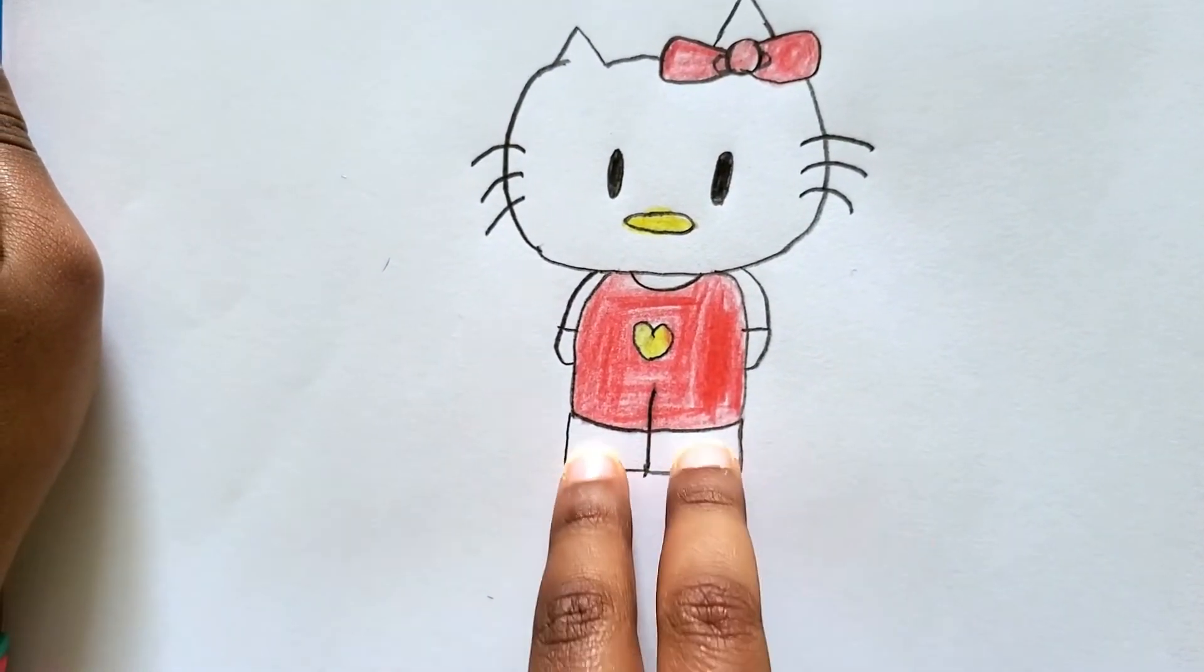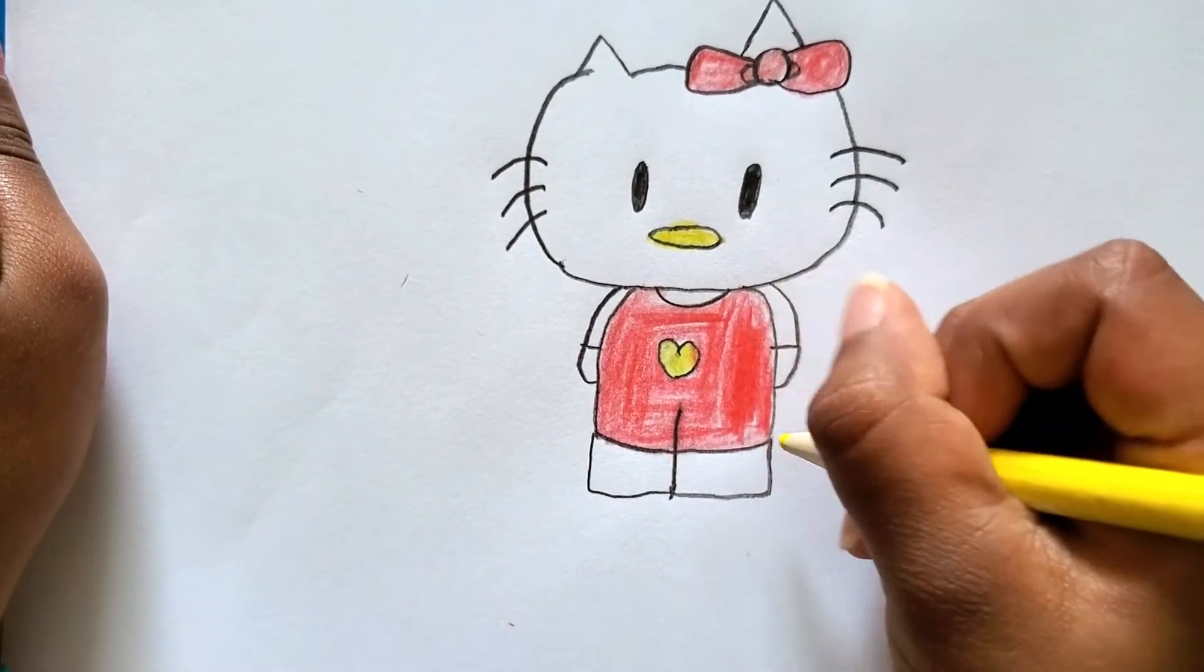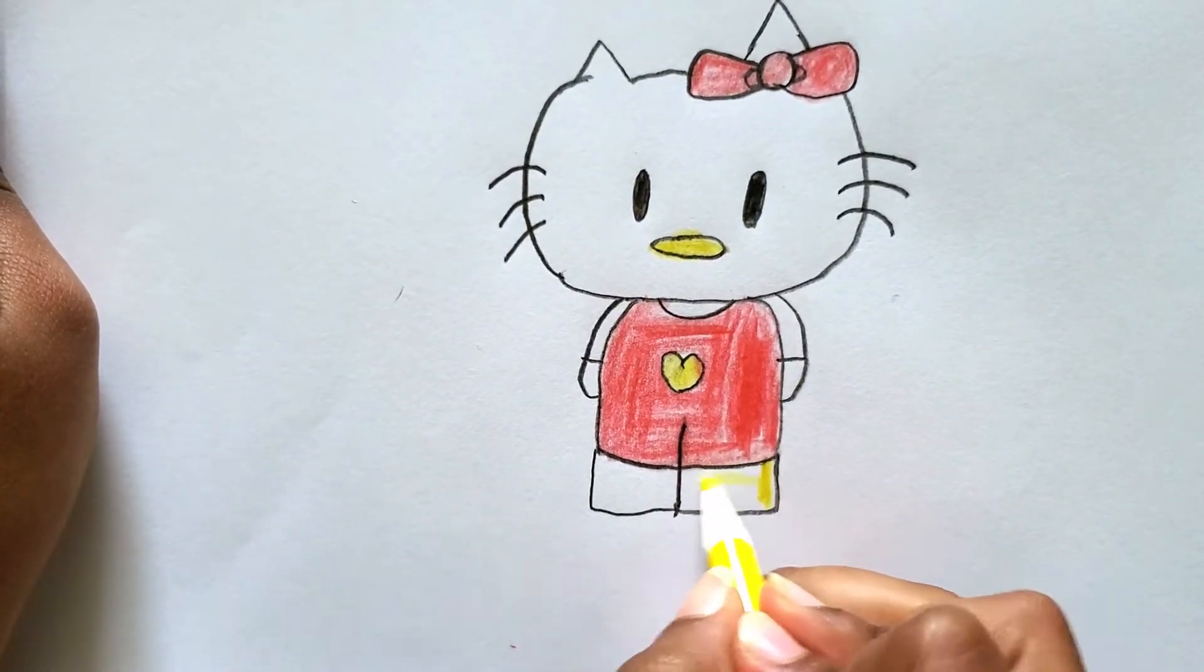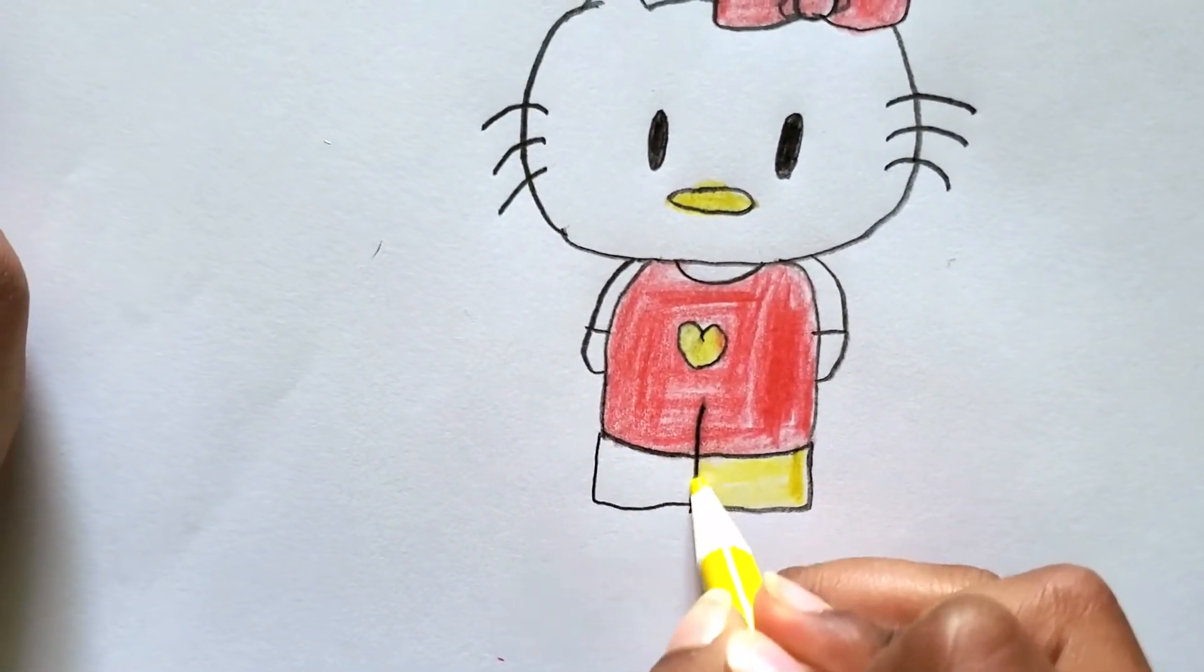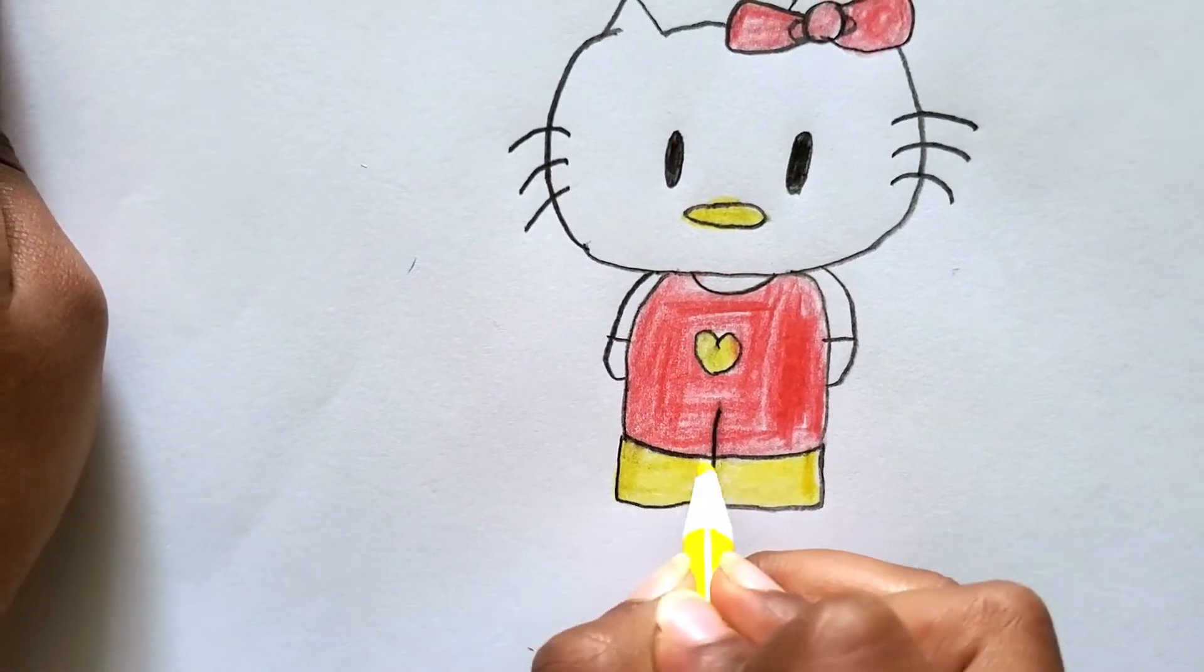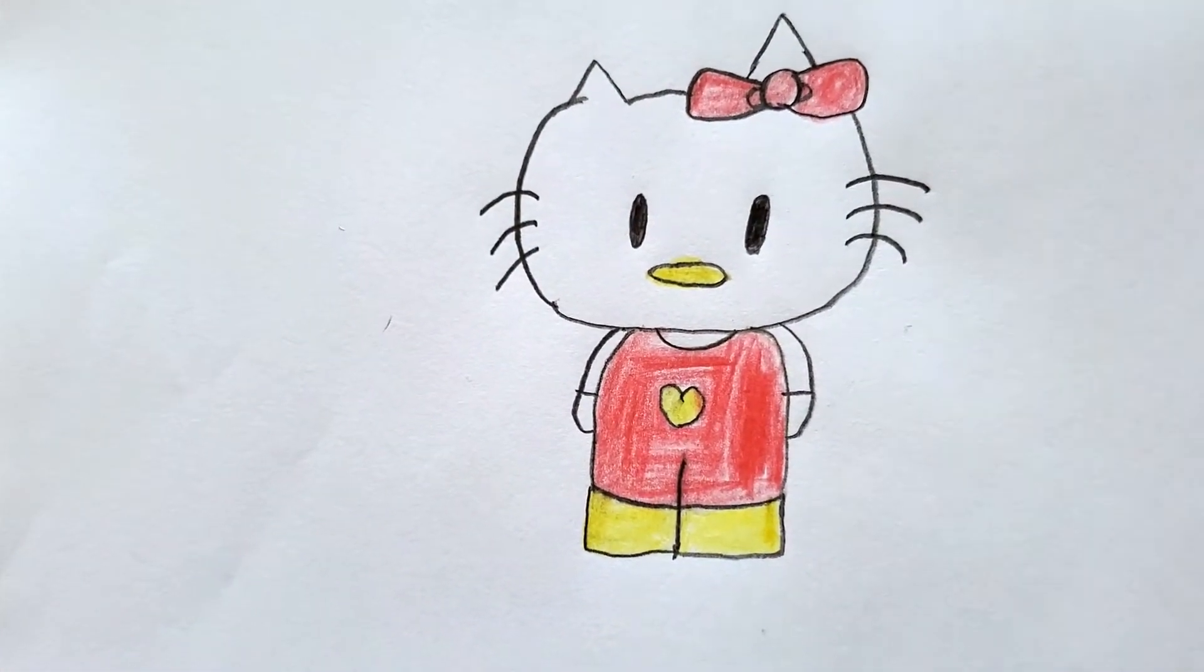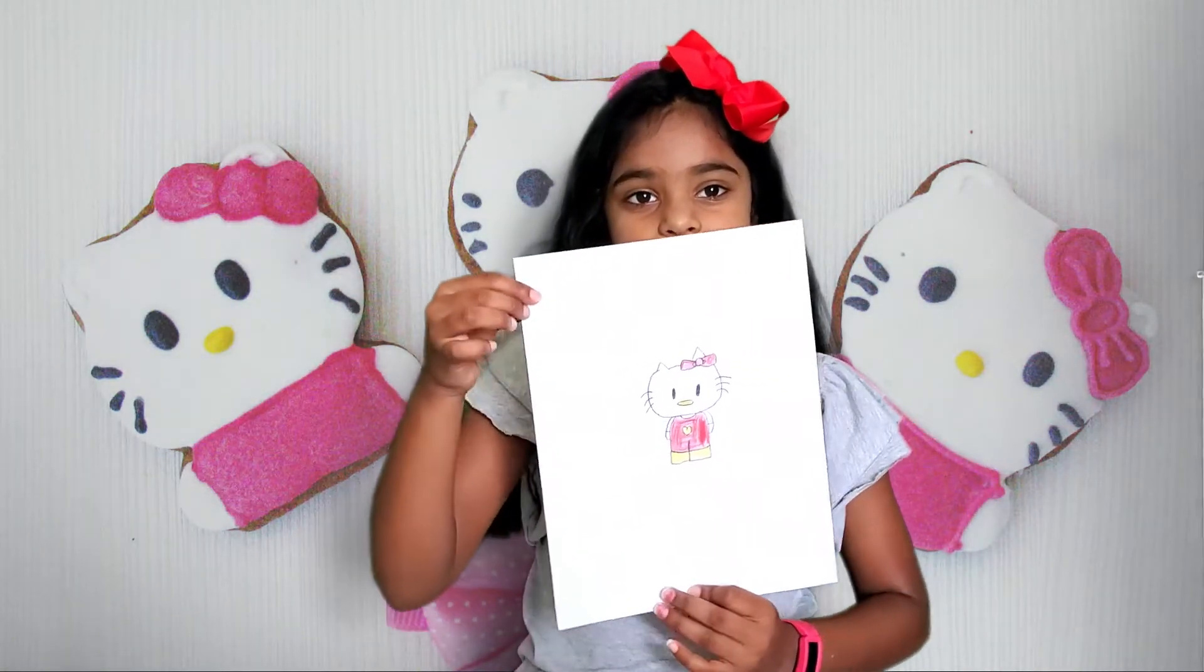So now let's color her two shoes. You can color them another color if you want, but I'm kind of coloring them to match her heart and her mouth. This is how to draw a Hello Kitty. So this is how you draw a Hello Kitty.